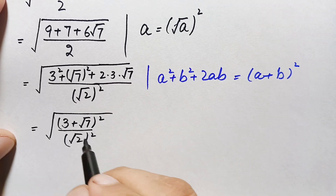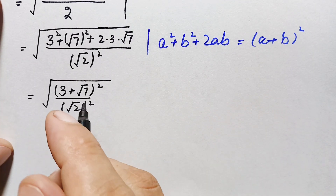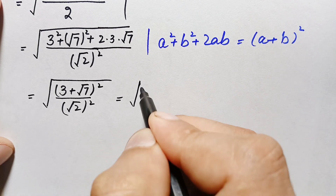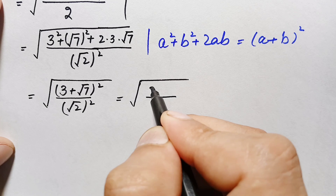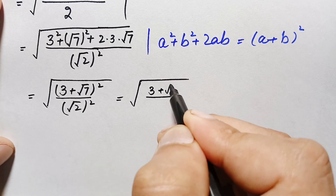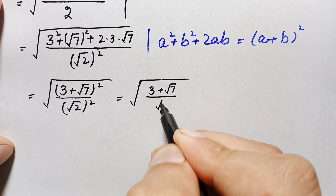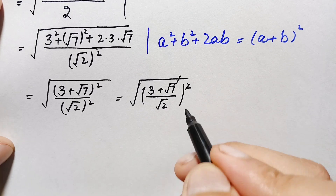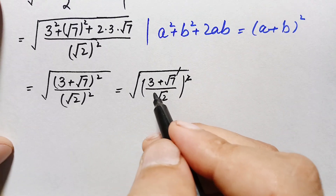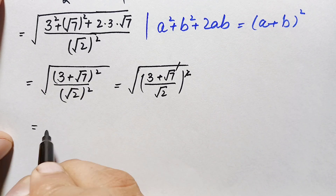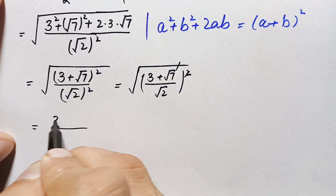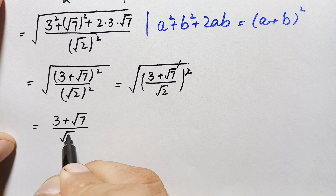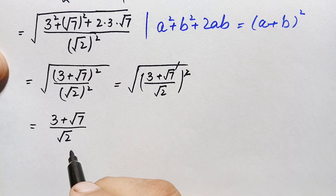Since both numerator and denominator are perfect squares, we can take the square common. This becomes the square root of (3 + √7) divided by √2, whole squared. The square and the square root cancel, leaving us with (3 + √7) divided by √2.